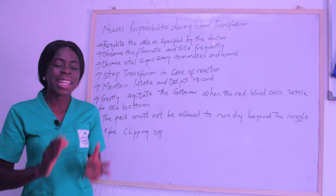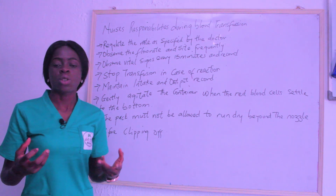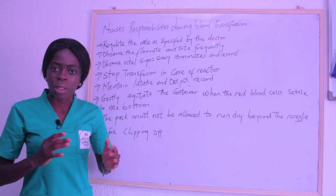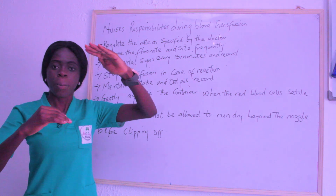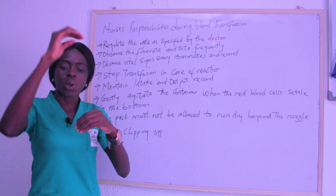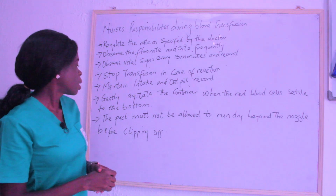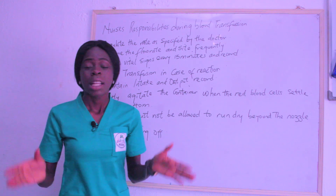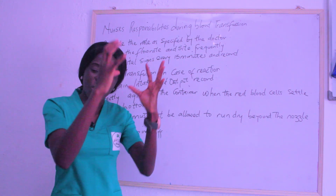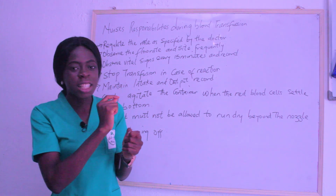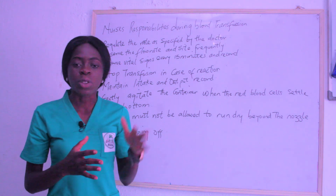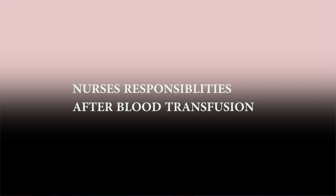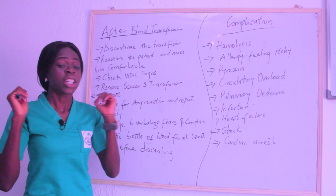Gently agitate the container when the red blood cells settle to the bottom — rock or shake the blood bag so the components mix, because if left undisturbed, red blood cells settle and plasma remains on top, meaning the patient no longer receives whole blood. Also, the pack must not be allowed to run dry beyond the nozzle — clip it off before it empties completely to avoid air entering the body.